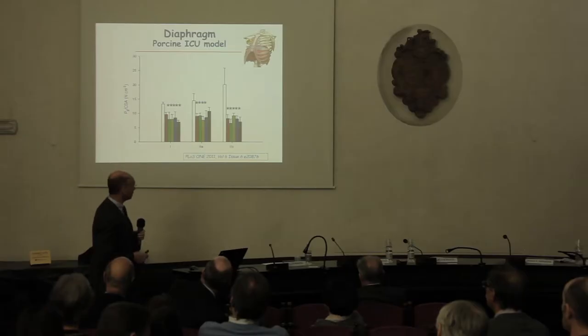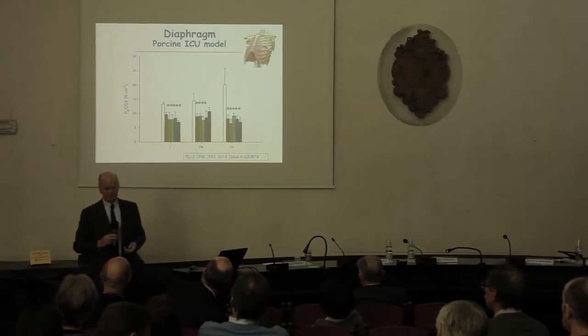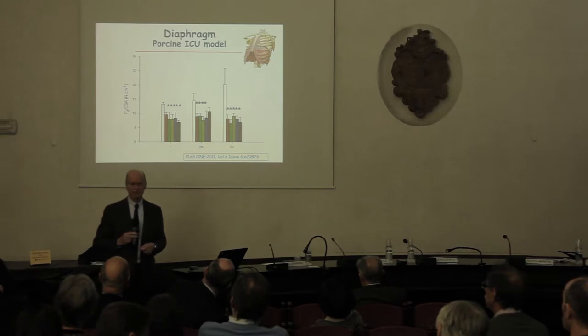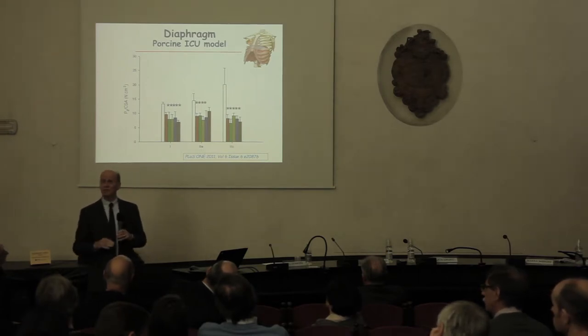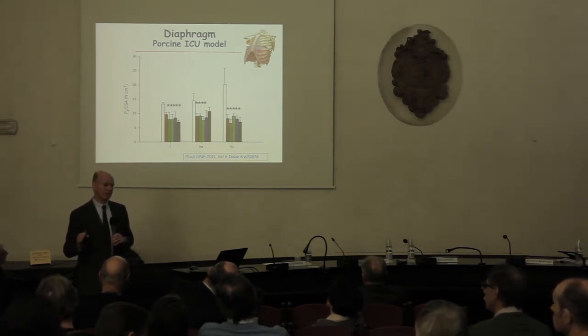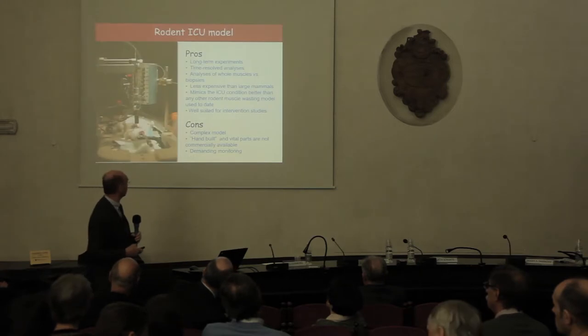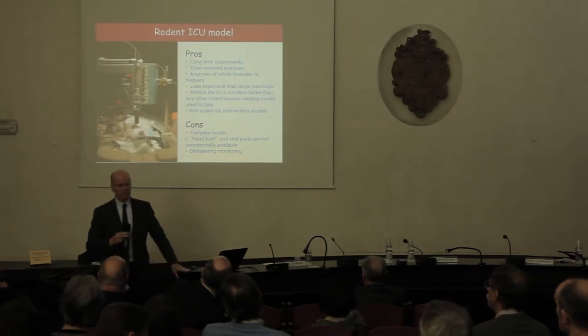The muscle that anesthesiologists are most interested in — besides the heart — is the diaphragm, because it determines how fast you can wean a patient from the ventilator. Looking at specific force in different cell types, independent of the type of intervention, there's a loss in function. The common denominator is mechanical ventilation — it doesn't matter if you add sepsis or anything else. Mechanical ventilation is doing something to the diaphragm.